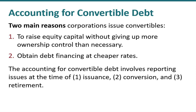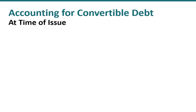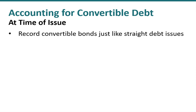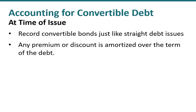From an accounting perspective, we're going to need to talk about the issuing of convertible debt, how we account for conversion of convertible debt, as well as the retirement of convertible debt. First, at the time of issue, it's very simple: convertible bonds are recorded just like straight debt issues, and any premium or discount is amortized over the term of the debt.